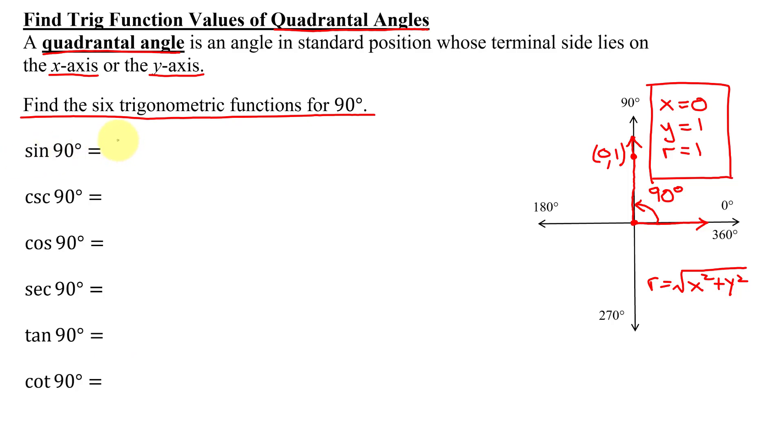The sine function is equal to y over r. y is 1, r is 1, so it's 1 over 1, which is 1. So the sine of 90 degrees is equal to 1.